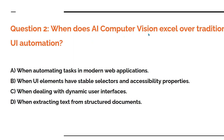The next question: when does AI computer vision excel over traditional UI automation? When it excels, that means when it works. The options are: A) when automating tasks in modern web applications, B) when UI elements have stable selectors and accessibility properties — note that stable means you should go for UI automation, so this is a wrong answer — C) when dealing with dynamic user interfaces, D) when extracting text from structured documents. Note the wording: it says structured, not scanned documents, which might confuse you.